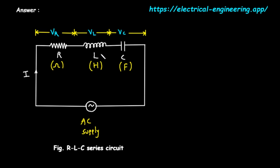The second component is an inductor, represented by the letter L and a coil symbol. Its property is inductance, measured in Henrys. An inductor is essentially a coil of wire. It resists changes in current. When the current tries to change, the inductor creates a magnetic field that pushes back, opposing that change. This opposition is called inductive reactance.